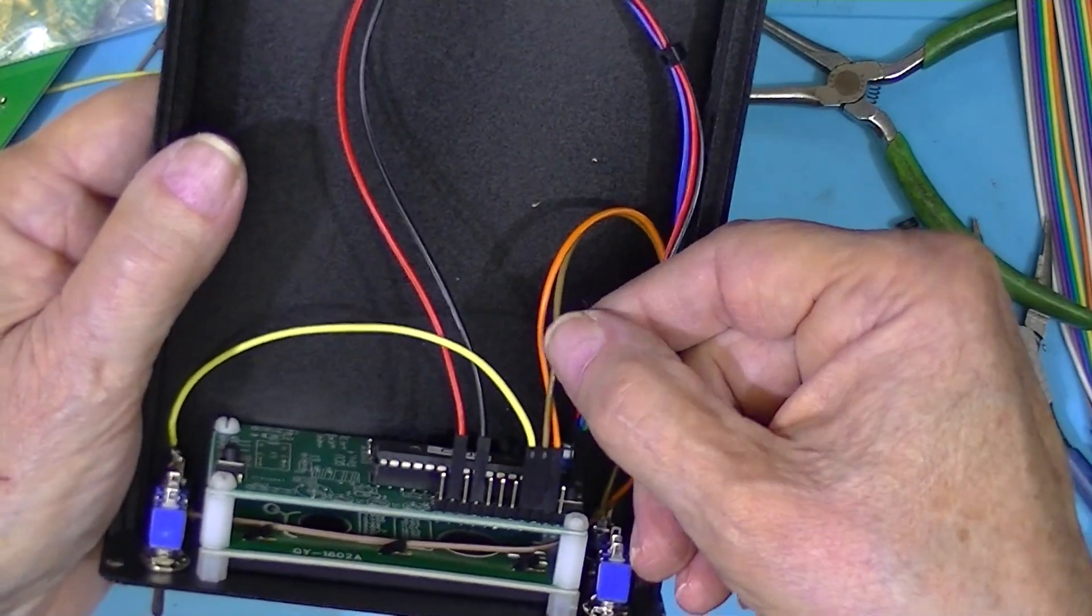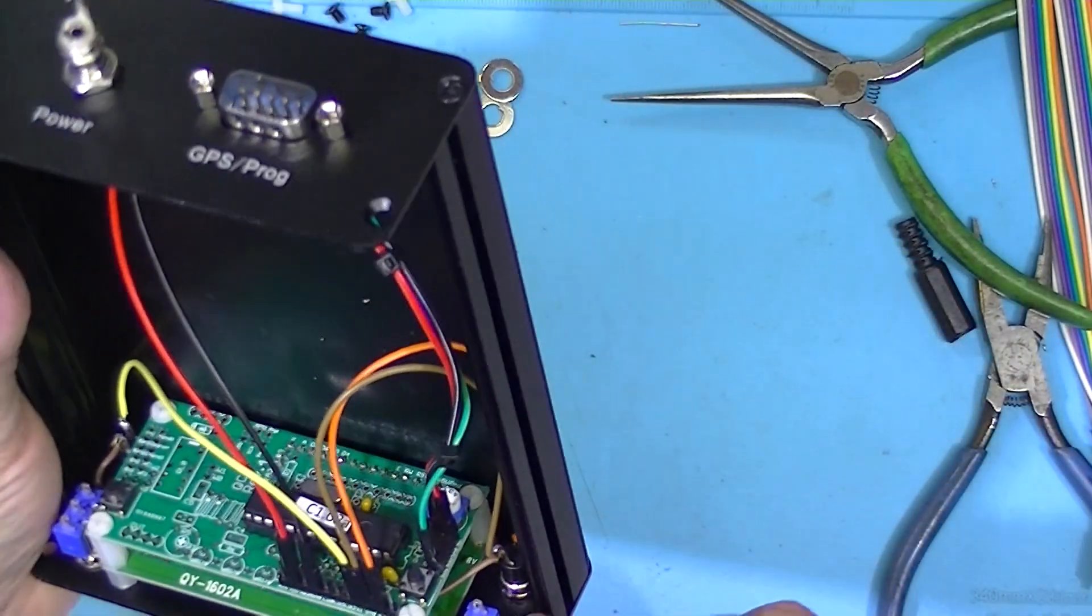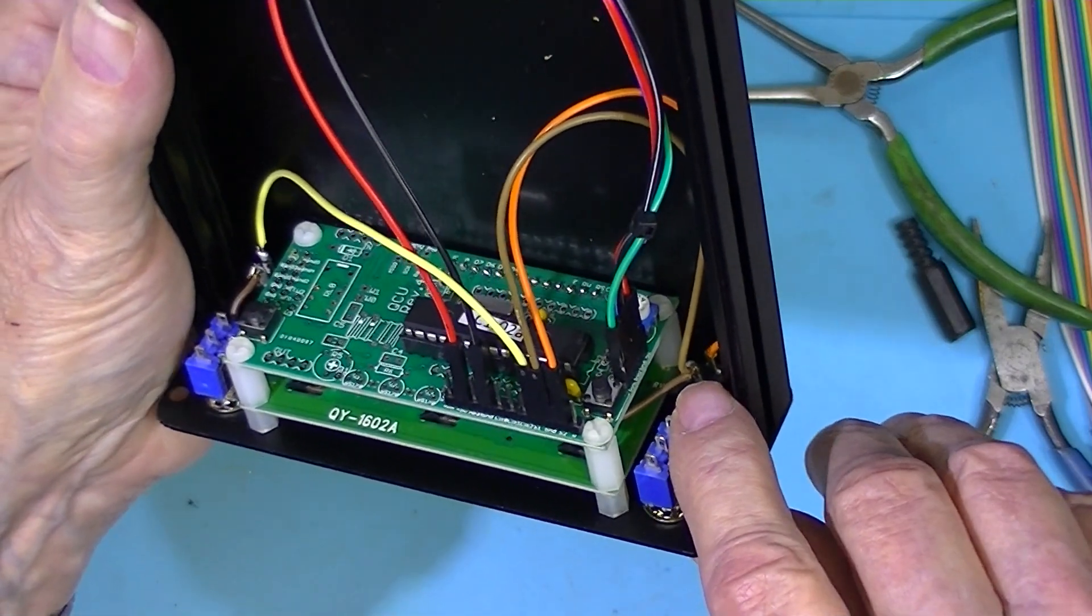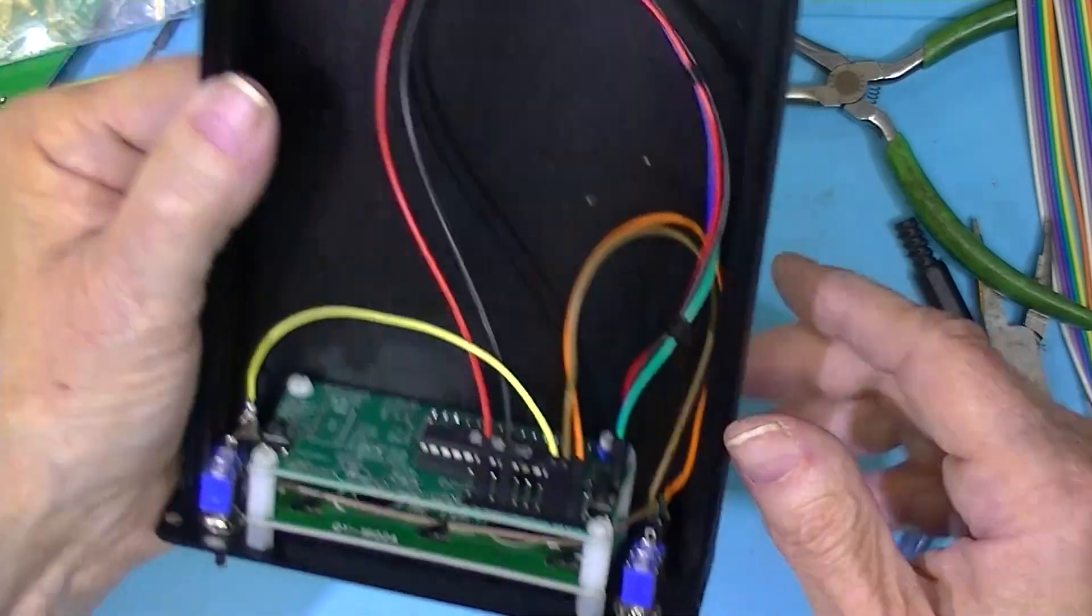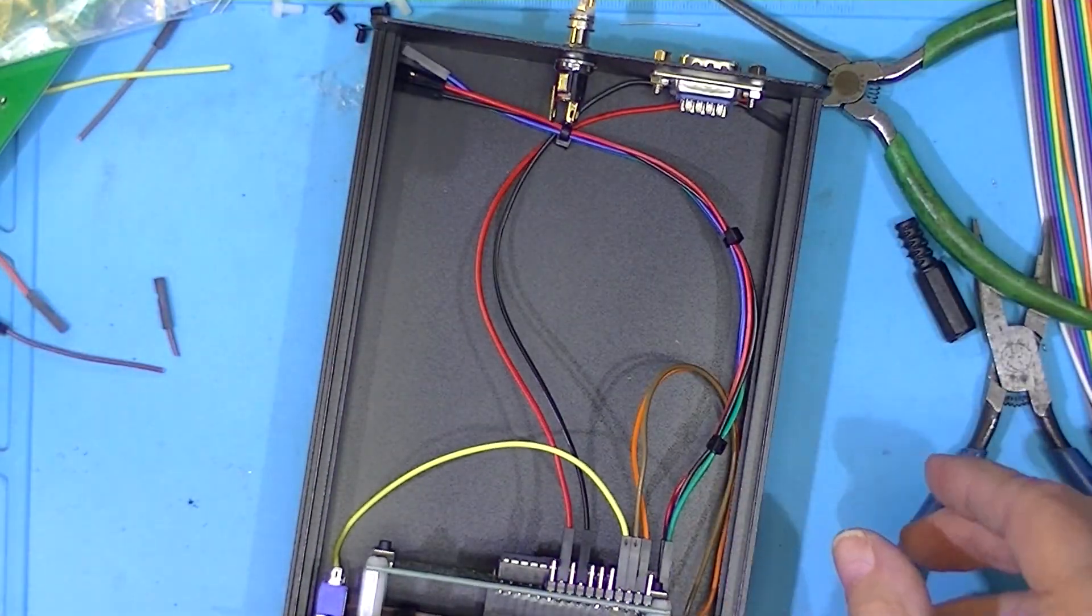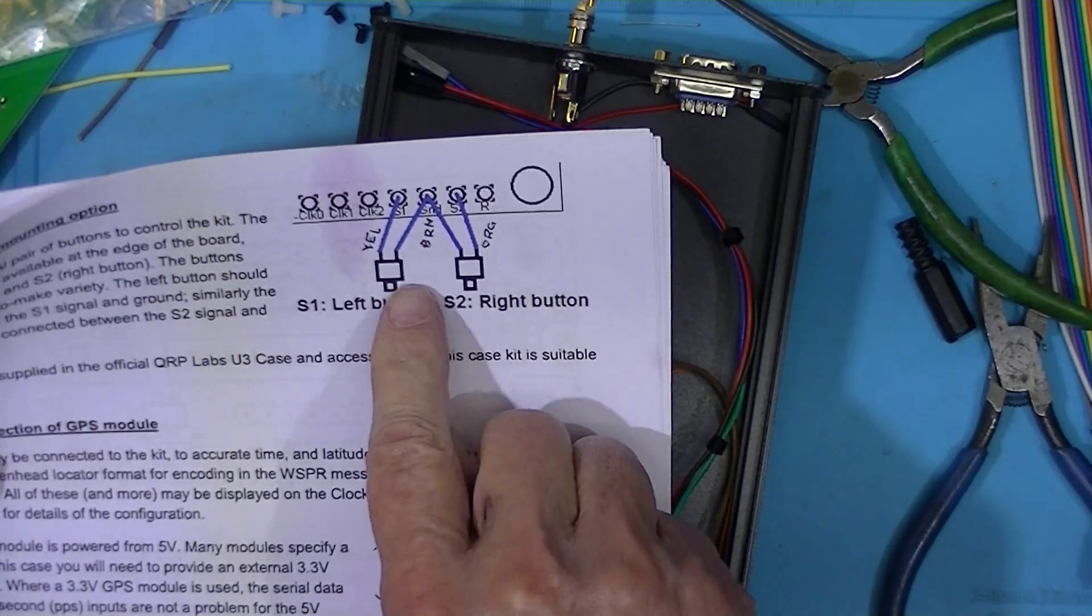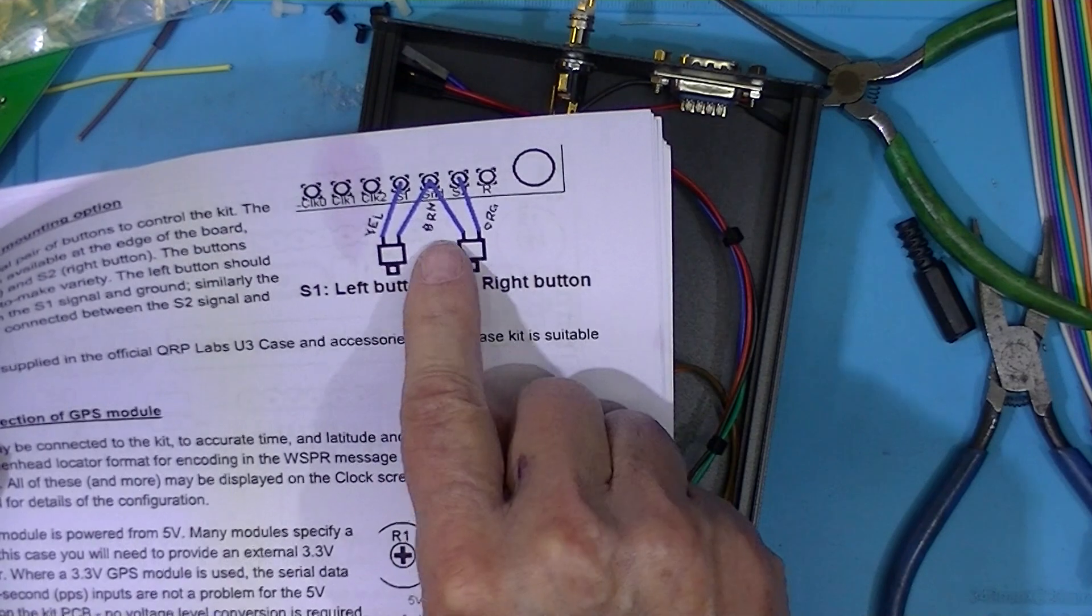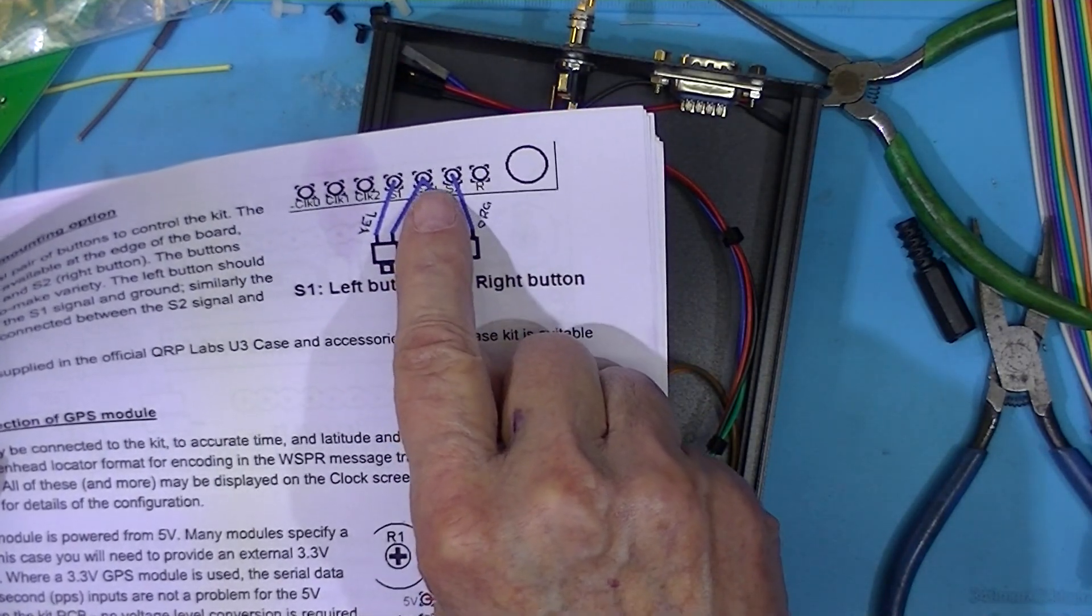There is no convention as far as the switches go. I've elected to use brown as a common, and I made a connection between the two switches with the brown jumper. It's easier to make a connection between the terminals than it is to put two male pins on one female.